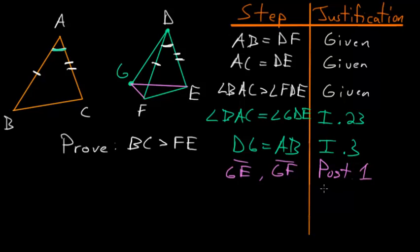From here we want to use Book 1, Proposition 4, which is essentially the side-angle-side theorem, applied to triangles BAC and GDE. Since DG equals AB, and AC equals DE, and the angle contained between them — GDE and BAC — are equal, the two triangles are completely equal by SAS.